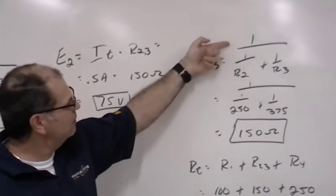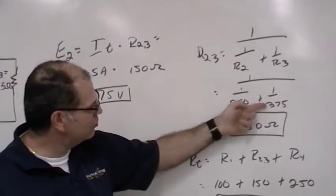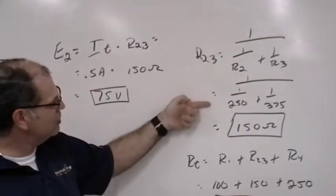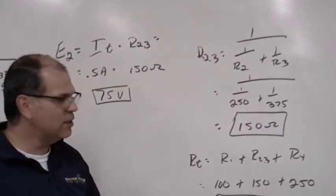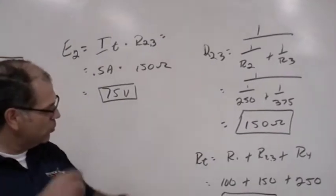And the two components are 250 and 375. You punch this into your calculator, and you get a total resistance across these two components of 150 ohms.